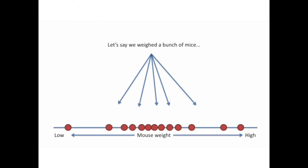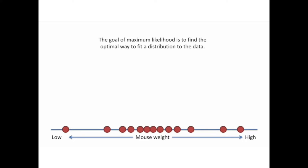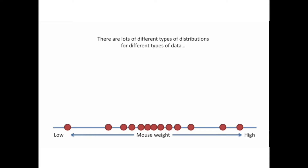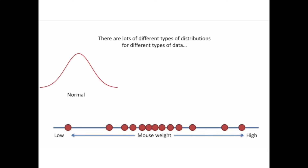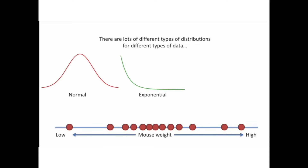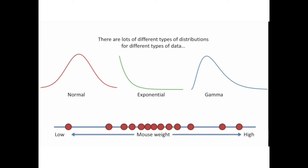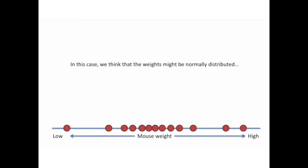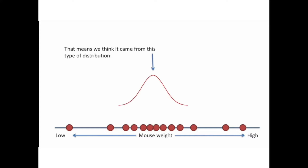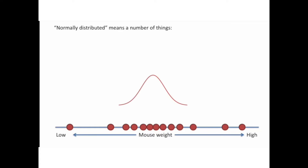To understand this, let's take an example. Let's say we have a bunch of mice. The goal of maximum likelihood estimation is to find the optimal way to fit a distribution to the data. There are many different types of distributions for different types of data — like normal distribution, exponential, gamma, and many more. In this case, we think that the mouse weight might be normally distributed, meaning we think it comes from this type of distribution.